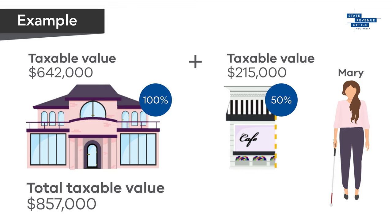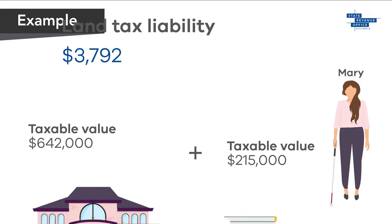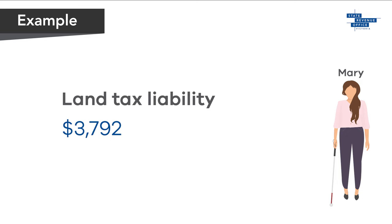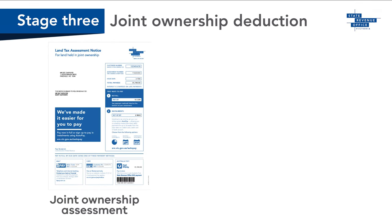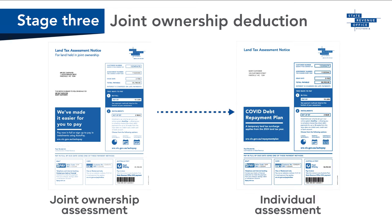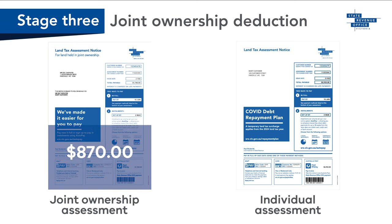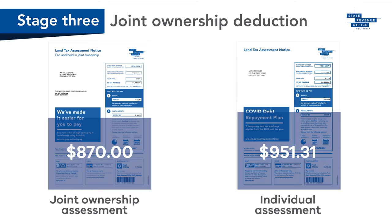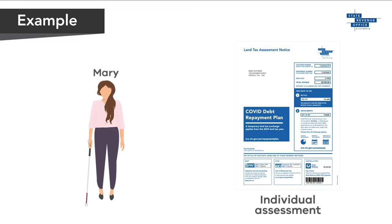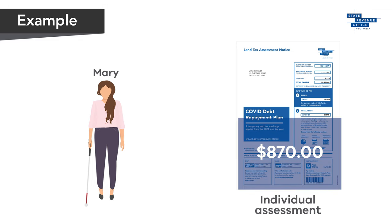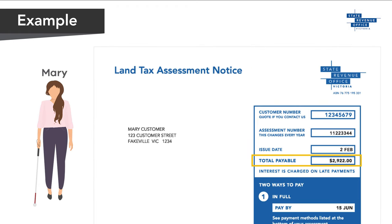Mary's total taxable value is $857,000, which attracts a land tax liability of $3,792. If an individual is assessed for land tax under a joint ownership assessment, we will apply a joint ownership deduction to the individual assessment. The deduction is the lesser of either the share of land tax on the joint ownership assessment, or the amount of land tax calculated on the individual assessment for their share in the jointly owned land. Mary is entitled to a joint ownership deduction of $870 for the land tax already assessed on the jointly owned land, resulting in an individual liability of $2,922.